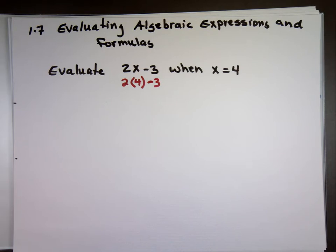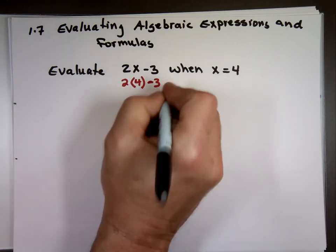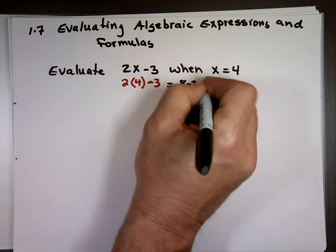If you remember the order of operations, we're going to do what first? Multiplication. 2 times 4? 8. 8 minus 3? 5.